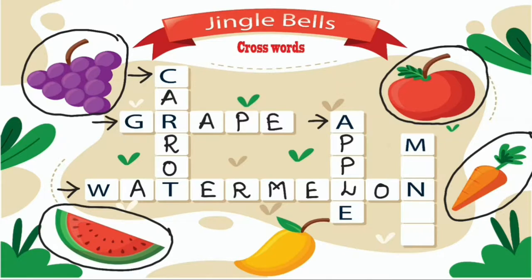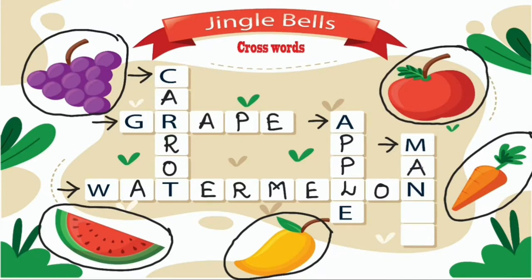We have come to the last word of this puzzle, and it is the name of a fruit which starts with the letter M. Children, it is a yellow color fruit. Where is the yellow color fruit in this picture? It is a tropical yellow color fruit. Yes, it is mango. M-A-N-G-O. Mango.